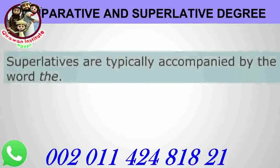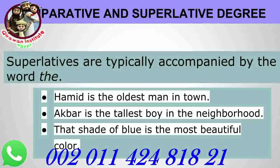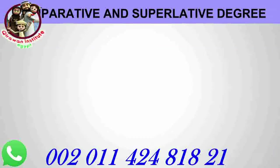Wherever we are comparing between two things, we use the word 'than' in English. In superlatives, we use the word 'the' to specify. For example: Hamid is the oldest, Akbar is the tallest man, that shade of blue is the most beautiful. We use the superlative along with a definite article 'the'.